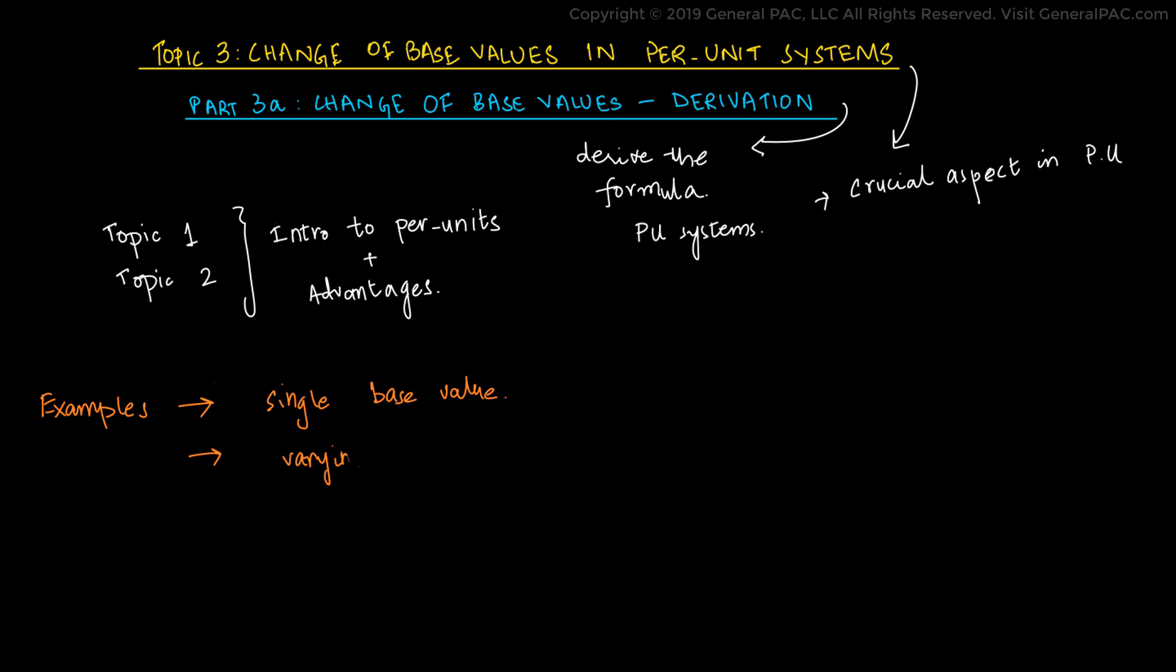But what if different regions in power systems have varying base values? For example, the generator side would be working on 200 MVA base power, the transmission line has a base power of 50 MVA, and the base power of the load side is 100 MVA.